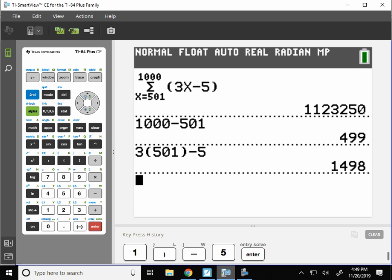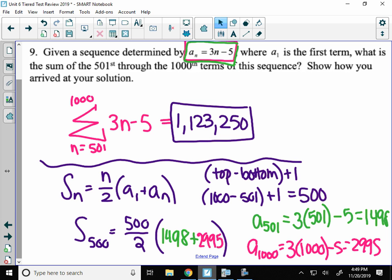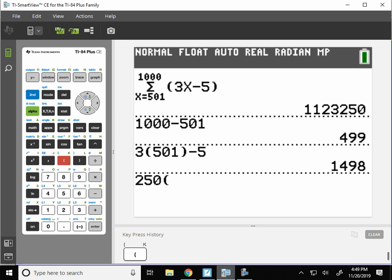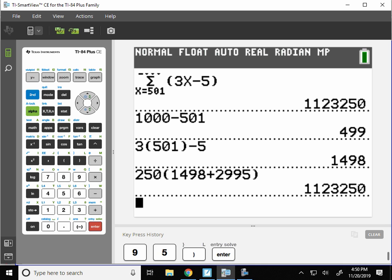And let's type that sum in and see if we get the right answer. Okay, so we'll have 500 divided by 2, which is 250, times, what was our first number again? 1, 4, 9, 8. Plus, 2, 9, 9, 5. And that's the same number.